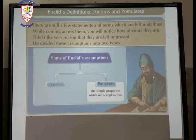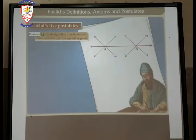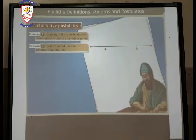Now come to the postulates. The simple properties which we accept as true. There are five postulates of Euclid's. A straight line may be drawn from any one point to any other point. As it is shown in the diagram. Euclid's second postulate: A terminated line can be produced indefinitely. It is also given in the diagram. We can produce any line part from any direction.